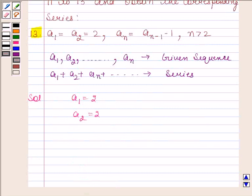As we are given the first 2 terms of this sequence, we have to find the next 3 terms by using the relation aₙ = aₙ₋₁ - 1 when n > 2.